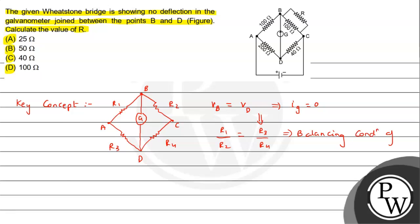in between, no current flows through it, that is Ig is zero. So we can say that if we place any resistance at that position, that resistance will also become ineffective because no current flows through that.